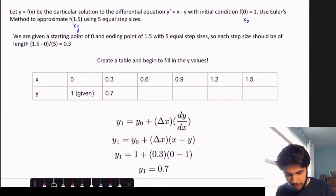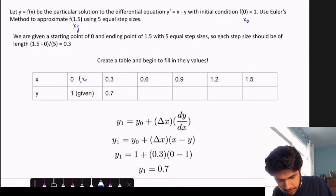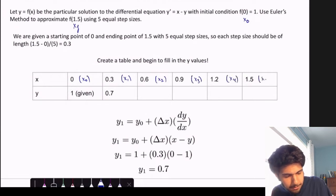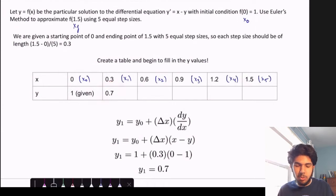So y sub 1, so this right here, we'll call this x sub 0. 0.3 is x sub 1, 0.6 will be x sub 2, this will be x sub 3, x sub 4, x sub 5. And I've already written the y value, y sub 1, but let's pretend we didn't know this and we had to calculate it. This is how we calculate it.